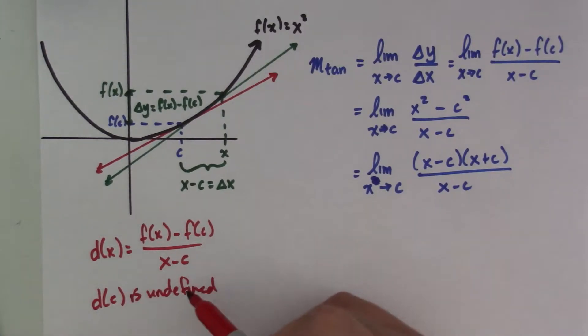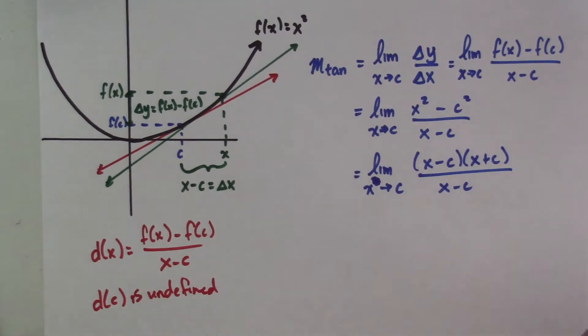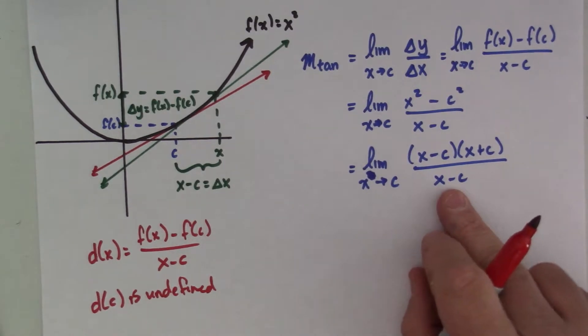But we're not talking about evaluating the function at x is c. What we're doing is we're asking, what is that function doing really close? And this goes back to doing the rational limits like we did in Chapter 2. I'm not plugging in c. What I'm asking is, what is the function doing when I'm really close to c?